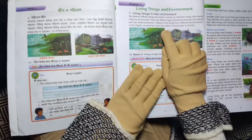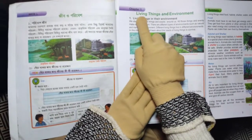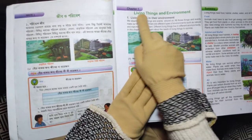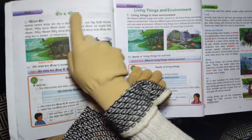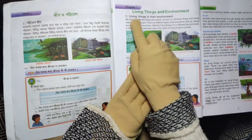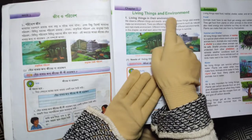This is our first science class. Today we are going to start our first chapter: Living Things and Environment — 'Jib o Poribes' — living things in their environment — 'Poribese Jib'. We observe different things and events around us.